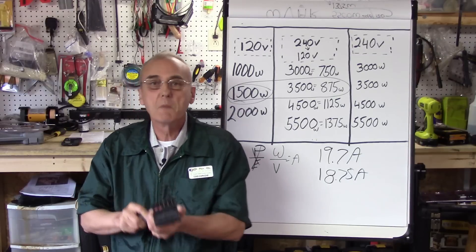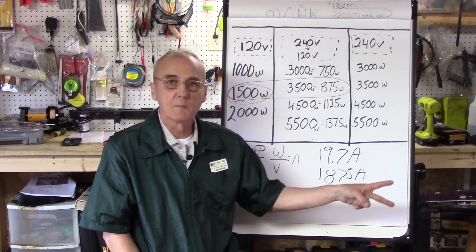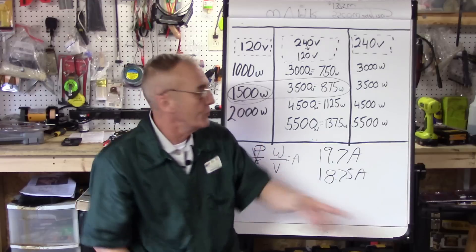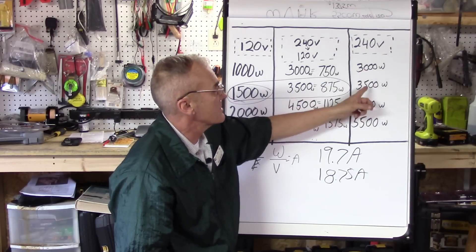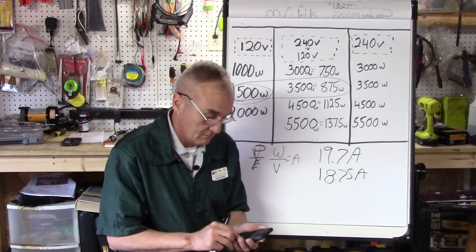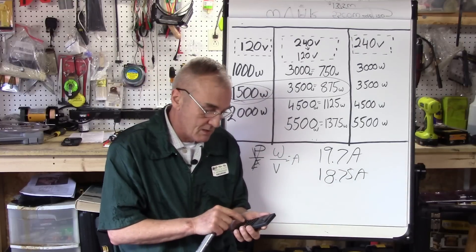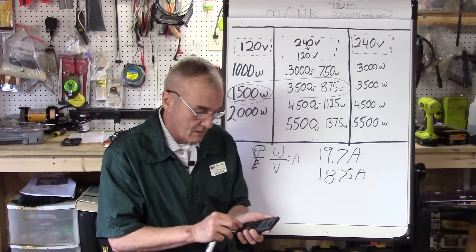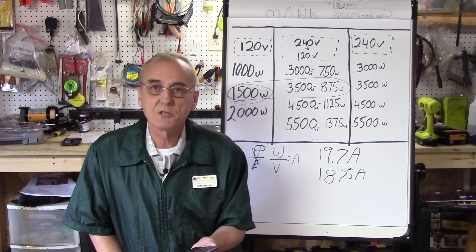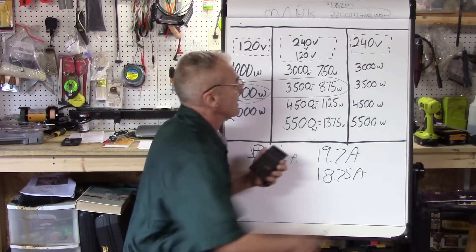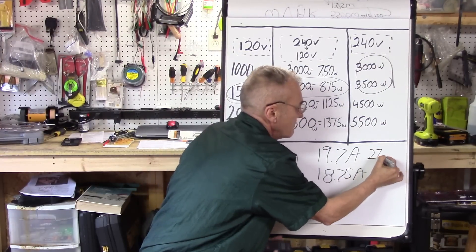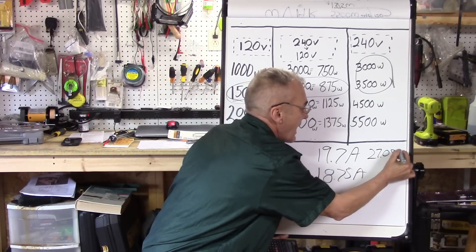This will work in any combination. One last one: let's do a 3000 and a 3500 on a 240 volt system. We'll say this one's on a 30 amp breaker. That would be 6500 watts divided by 240 volts, and we get 27.08 amps. So if we had these two wired together under 240 volts, that would be 27.08 amps. If we're on a 30 amp circuit, we're absolutely safe.